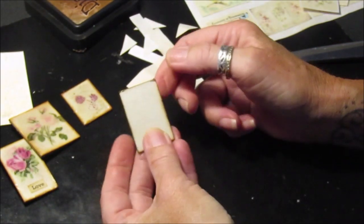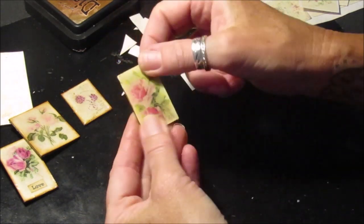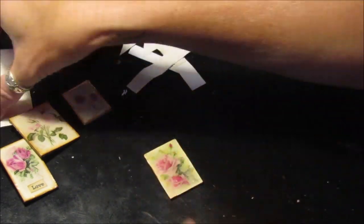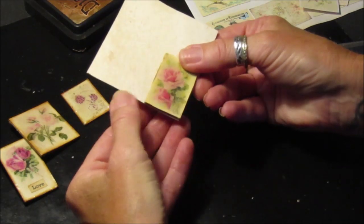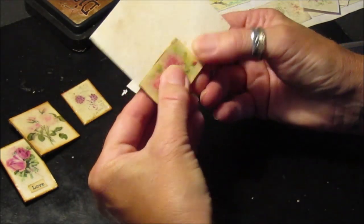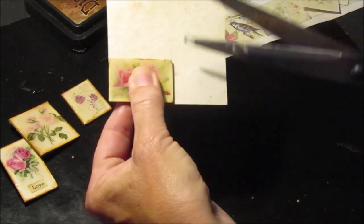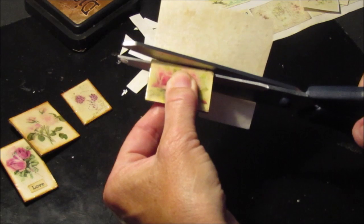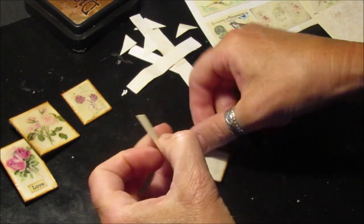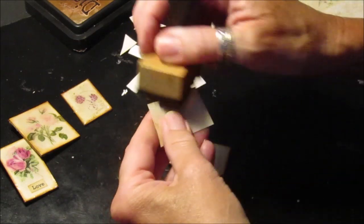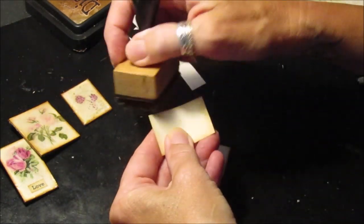Once you've done that and it's all dry, I've got a piece of card here and what I did is just cut around it so it's the same size. I'm going to just ink up the back a little bit.